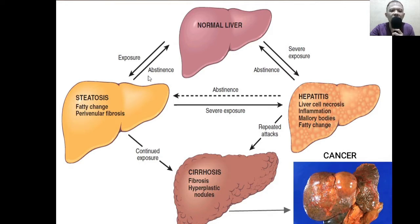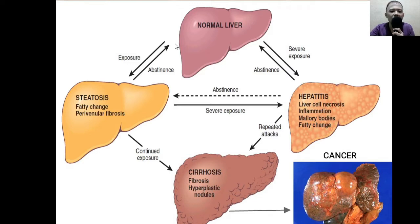However, when it is exposed to a higher degree of injury, from a fatty change the liver becomes inflamed — that is what we call hepatitis. This is very true for cases of alcoholism. When an alcoholic person drinks over a short period of time, the alcoholic person develops fatty change in the liver, or what we call steatosis. However, after a long period of time, the liver becomes inflamed — that is what we call alcoholic hepatitis.